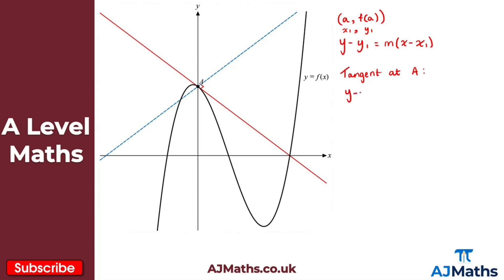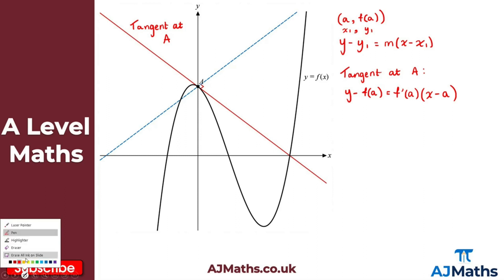The equation of the tangent is y minus f of a equals f prime of a times x minus a. So y minus y1, where y1 is f of a, equals f prime of a — we're looking for the derivative at point a — times x minus x1, which is a. So x minus a. And this is the equation of the tangent at a to this curve, and that represents the red line here.